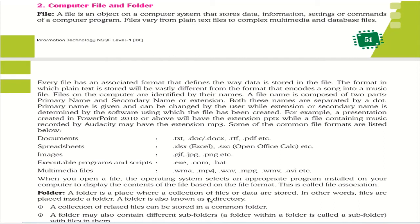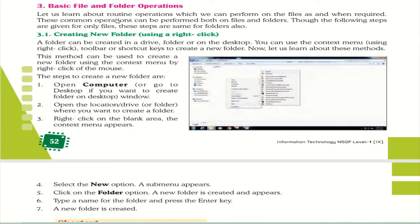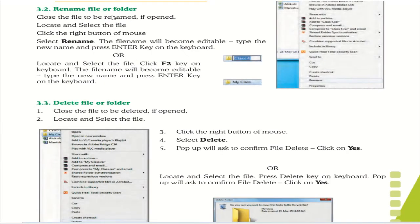Basic file and folder operations: to create a new folder, open the computer, right-click on a blank area, find the New option, click on the Folder option, then type the folder name and press Enter — your new folder is created. To rename a file or folder, right-click the file, find and click the Rename option, type the new name, and press Enter. To delete a file, click on the file or folder you want to delete, then press the Delete button, or right-click and select the Delete option.